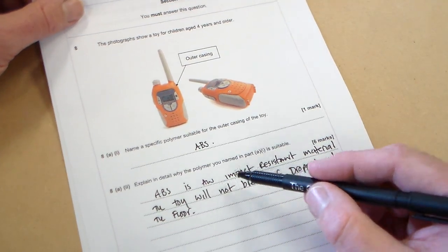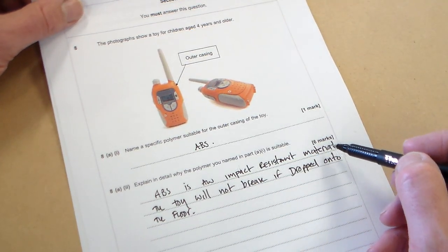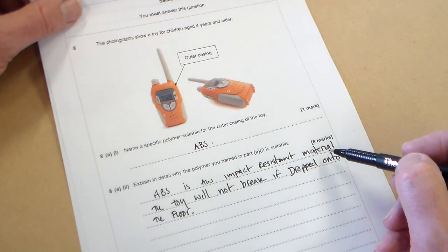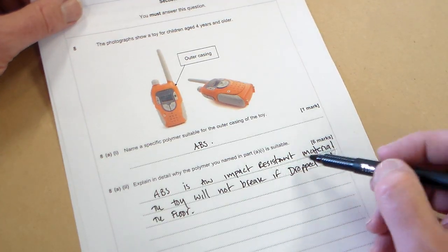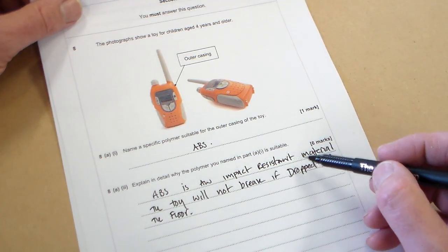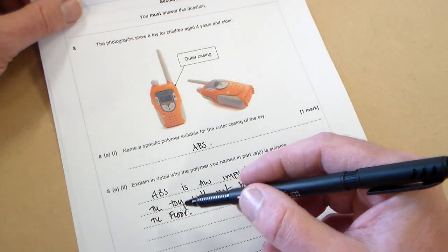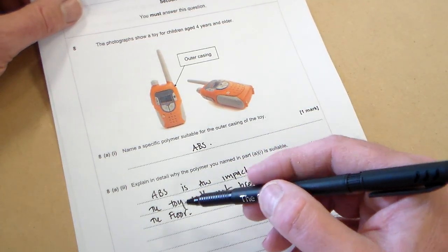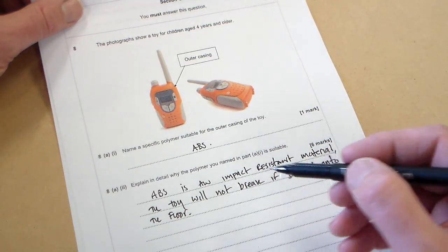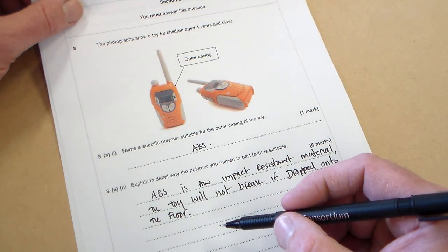So what we're looking at here is sets of two marks. ABS is an impact resistant material, that's one mark, and the qualification saying that the toy will not break if dropped onto the floor is another mark, so two marks.